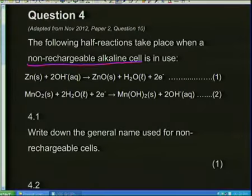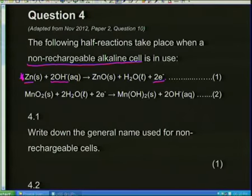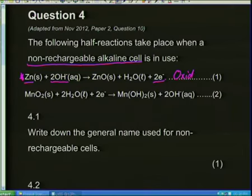There are two reactions. The first reaction has zinc on the left-hand side, plus 2OH⁻ — that's why it's called alkaline, it's got OH⁻ ions. My products include electrons. If electrons are on the right-hand side of an equation, this is oxidation — the oxidation half reaction. Because oxidation is the loss of electrons.